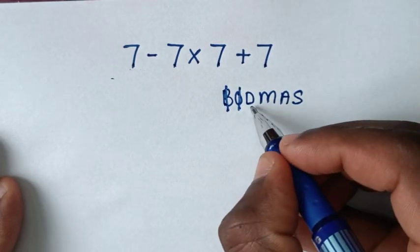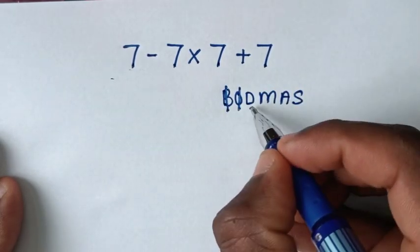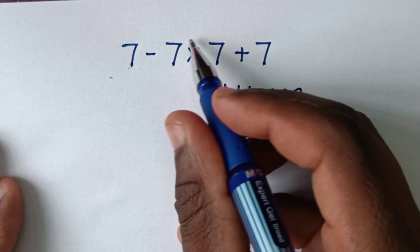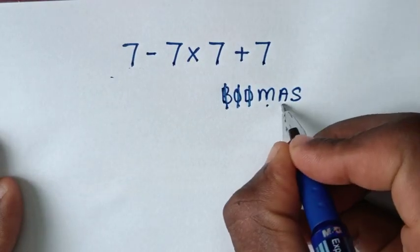D is for division - we don't have division in this problem. M is for multiplication - we have this multiplication here. A is for addition - we have addition. S is for subtraction - we have subtraction.